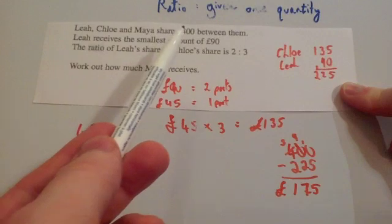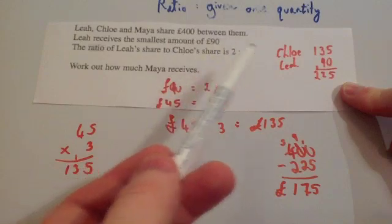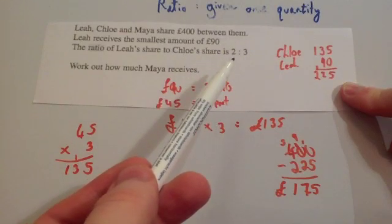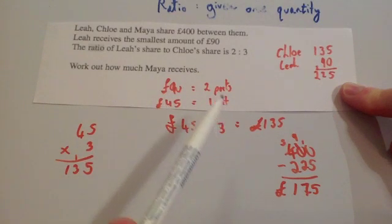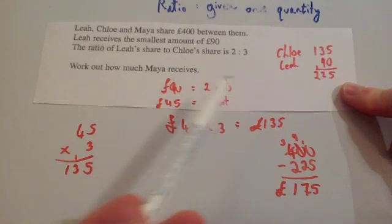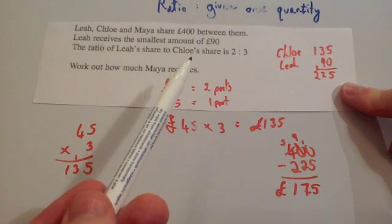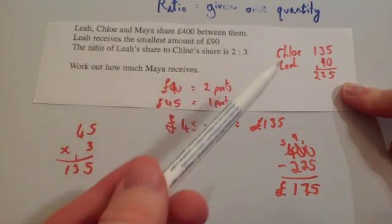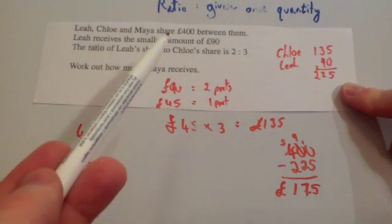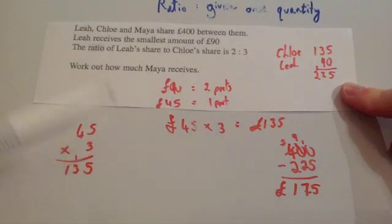To recap: the total is £400. Lia gets £90, and the ratio of Lia to Chloe is two to three. £90 is two parts, so half it to get £45 as one part, then times by three gives £135 for Chloe. Add Lia's £90 and Chloe's £135 to get £225, then subtract from £400 to find Maya gets £175.